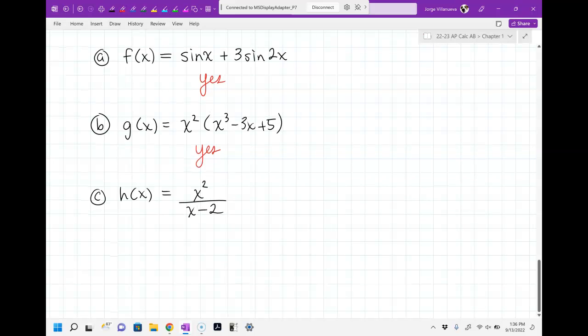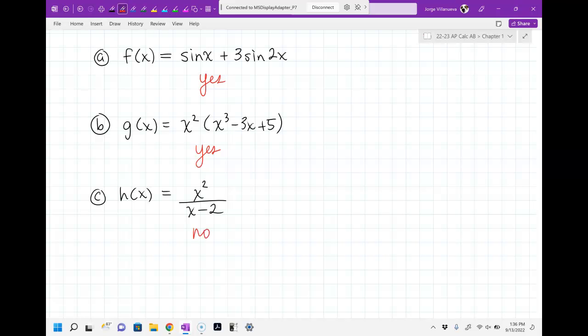Now, what is the domain of x squared for h of x? All reals. What about x minus 2? Except for 2. And at 2, it's going to probably have a what? A hole or vertical asymptote, most likely. Vertical asymptote. So, that's going to basically create discontinuity. Any asymptote is going to create discontinuity.